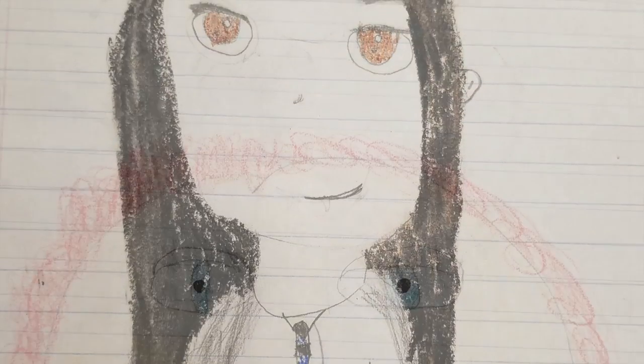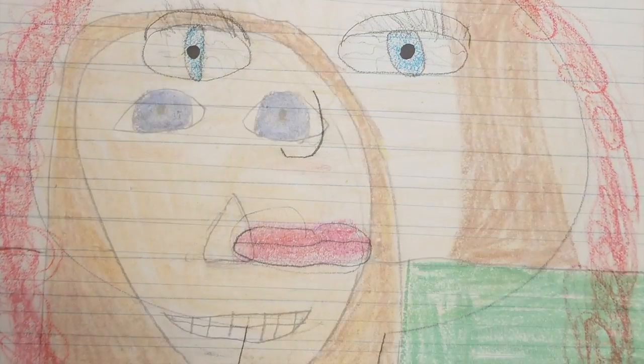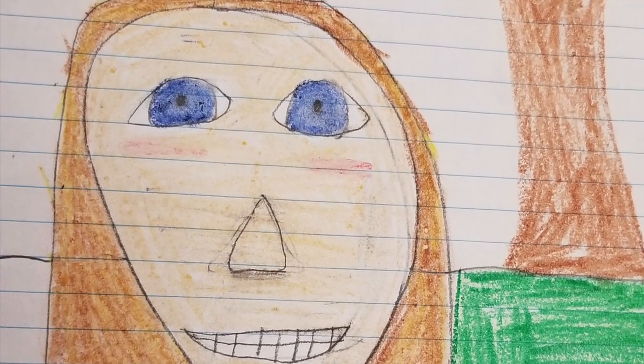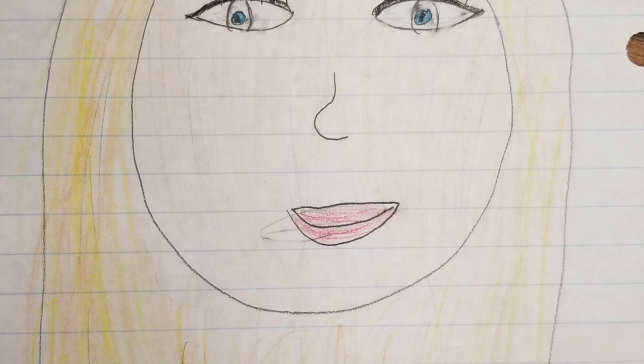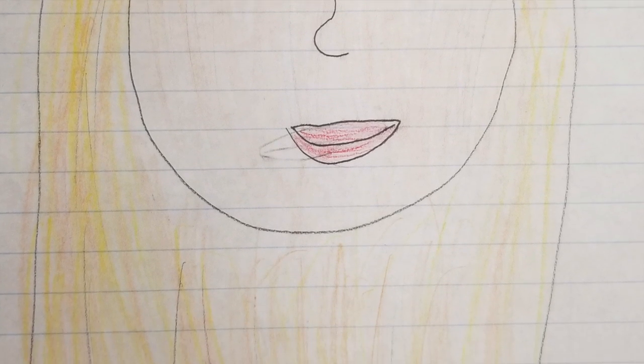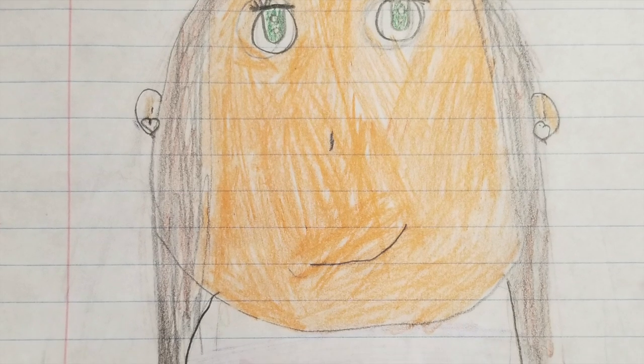You will often see the eyes are too high in the head or too small, maybe too big. The nose is usually just kind of an L shape or a triangle and is often way too small. And the mouth is simple and often sized incorrectly, often too big or too small.